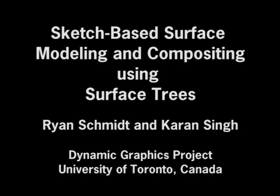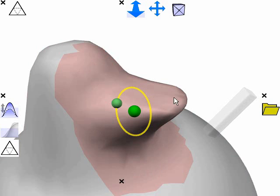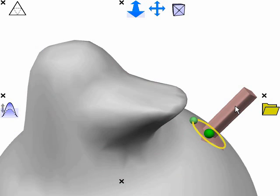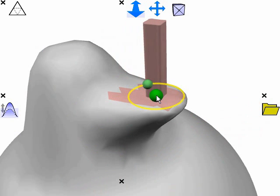A surface tree is a procedural hierarchy of layered surface edits. Here we have a tree with four layers. Layered edits can be manipulated by dragging them across the surface.